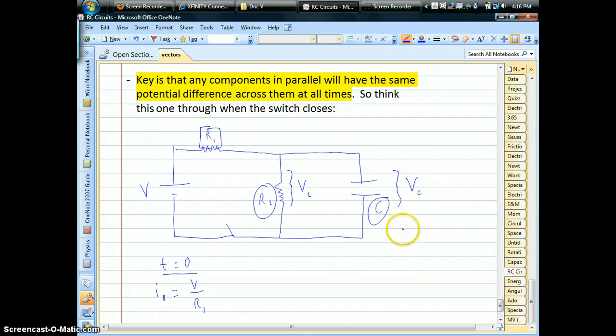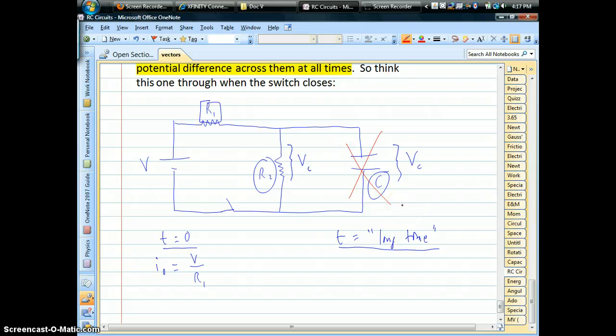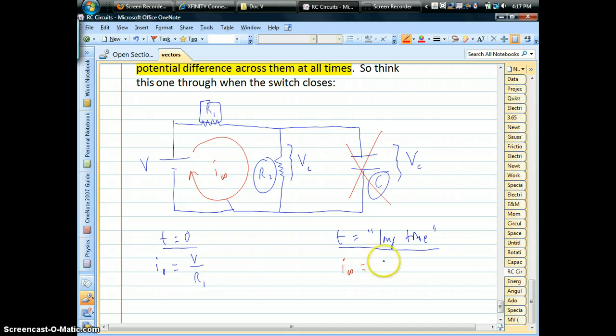Now, after a long time, let me jot that down here, capacitors kill current. Okay, they reach some maximum voltage, they negate what the battery is trying to do, and effectively, that part of the circuit is going to be dead. Okay, so after a long time, your current is going to be the voltage divided by R1 plus R2. It's as if those two resistors are in series, since nothing can happen with the capacitor anymore.